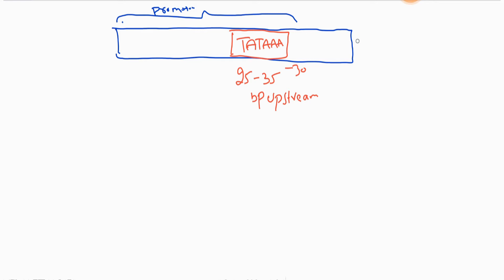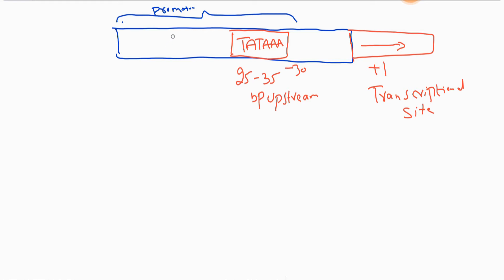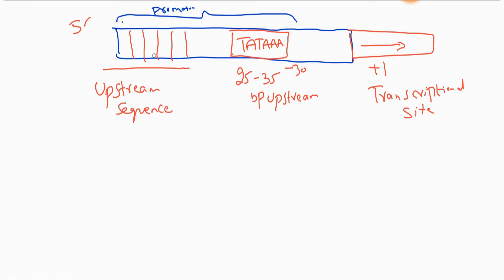The start site is known as the plus 1 transcriptional site, and the TATA box position is at minus 25 to minus 35. Sequences present around the TATA box affect the efficiency of initiation. Transcription is also regulated by upstream sequences lying 5 prime to the TATA box, enriched with guanine and cytosine, known as the GC box.